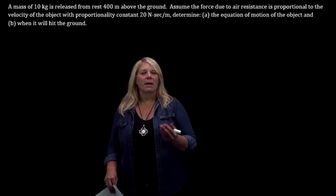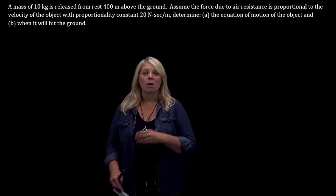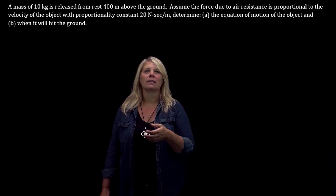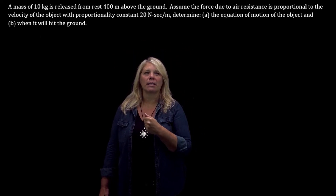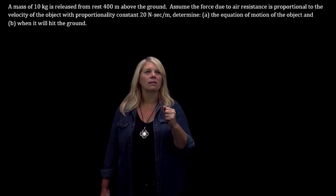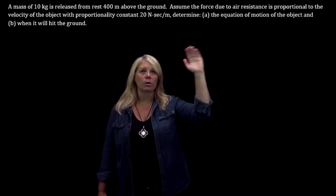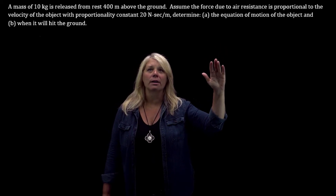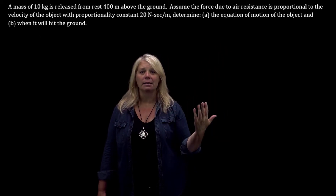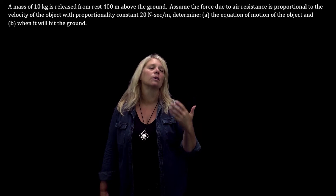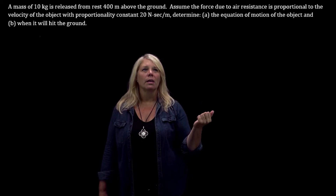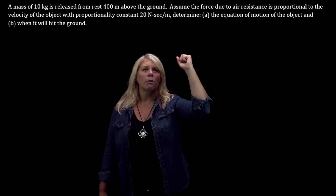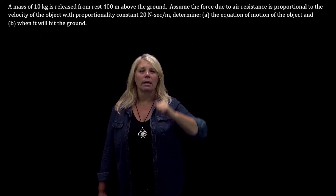We're going to look at another word problem here. This is a motion problem. We're given a description of this object: a mass of 10 kilograms released from rest 400 meters above the ground. We do have a force due to air resistance that we need to account for in our differential equation, so this is not ideal motion with no air resistance.